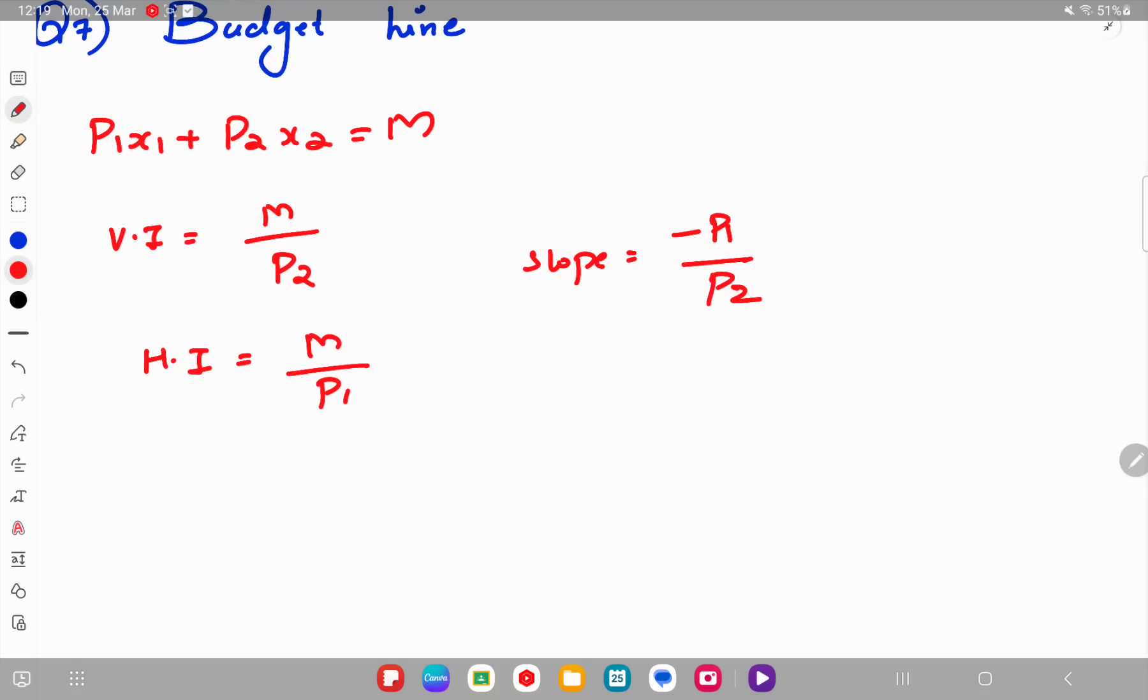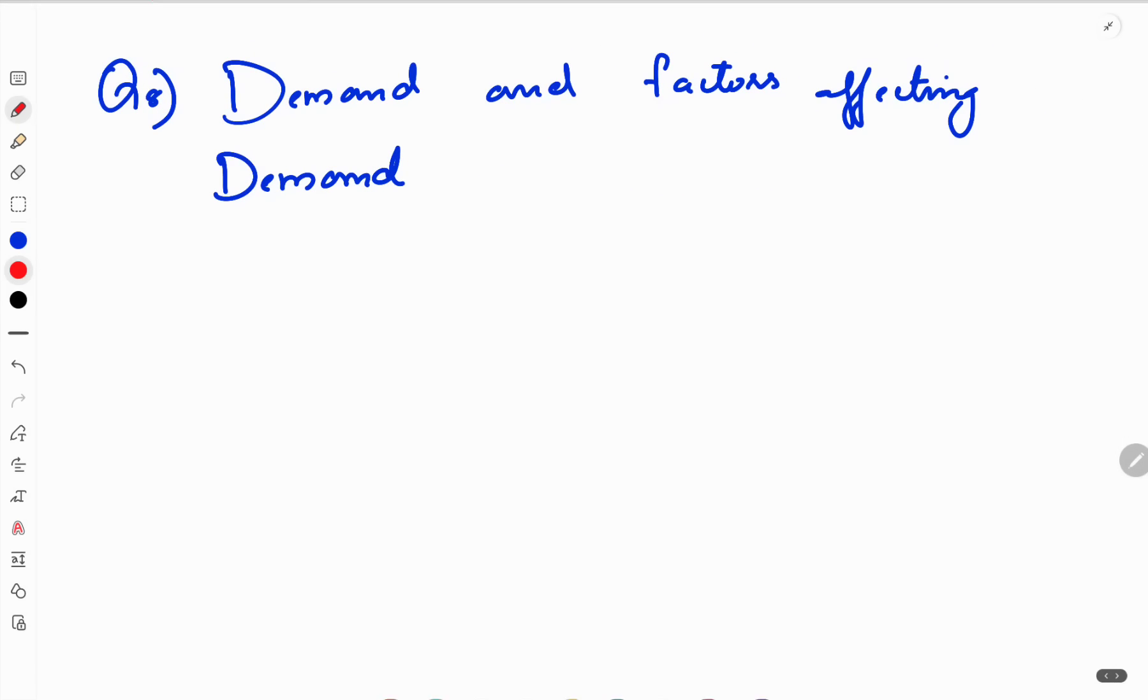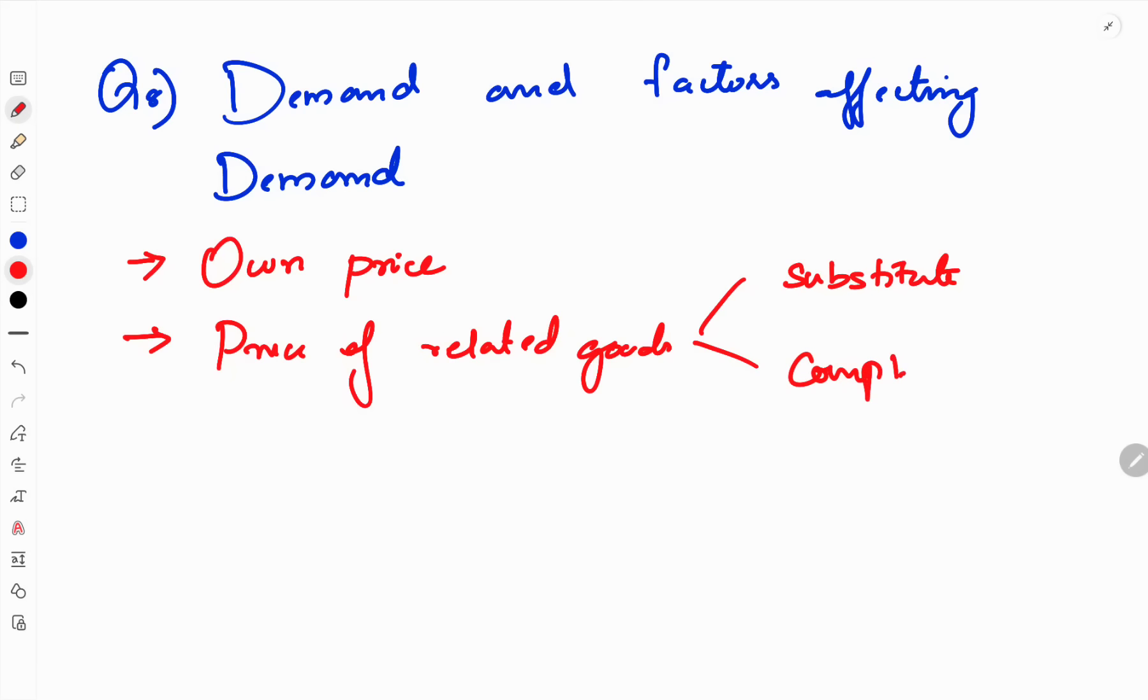The ninth question is demand and factors affecting demand. Demand is affected by own price of the commodity. Then price of related goods, which includes substitute goods and complementary goods.